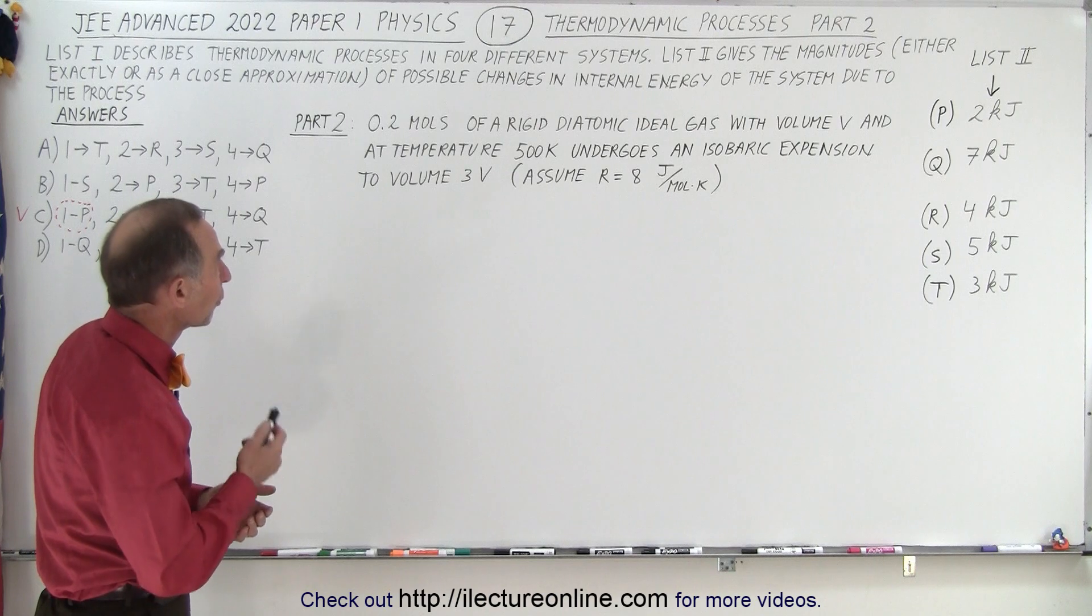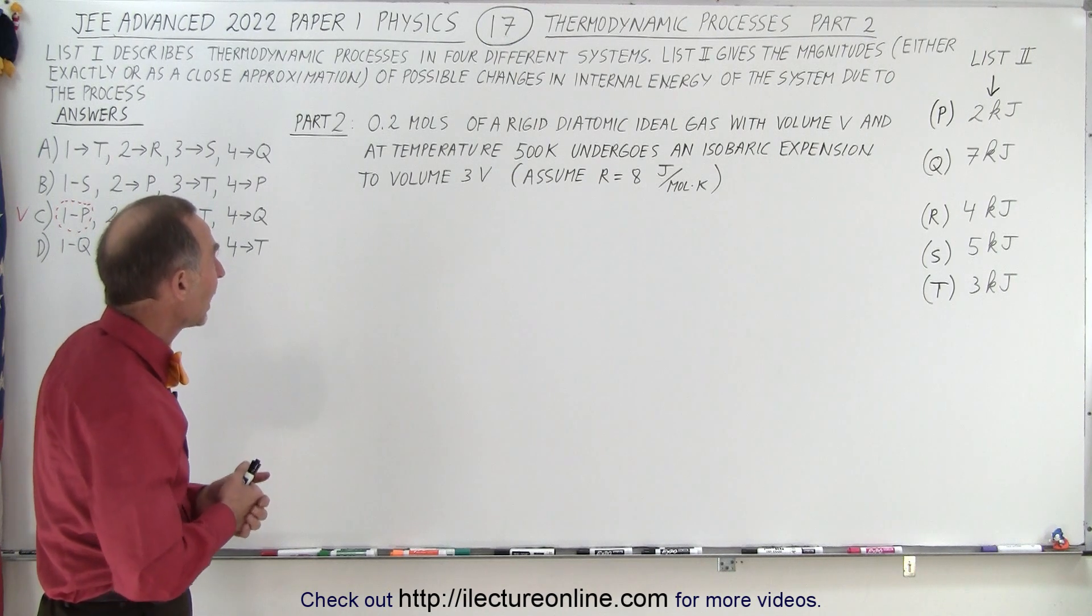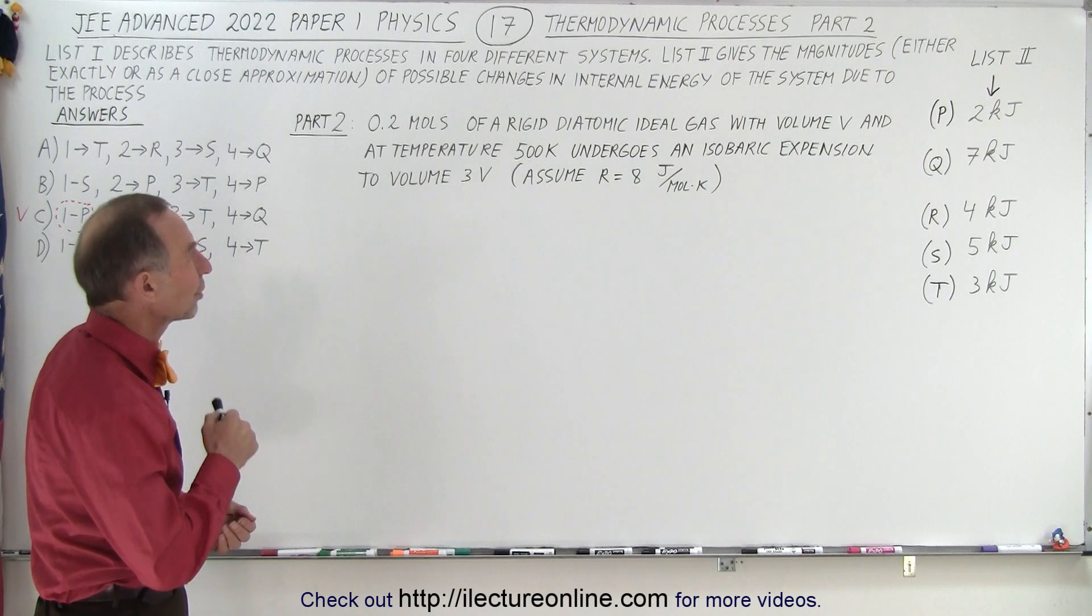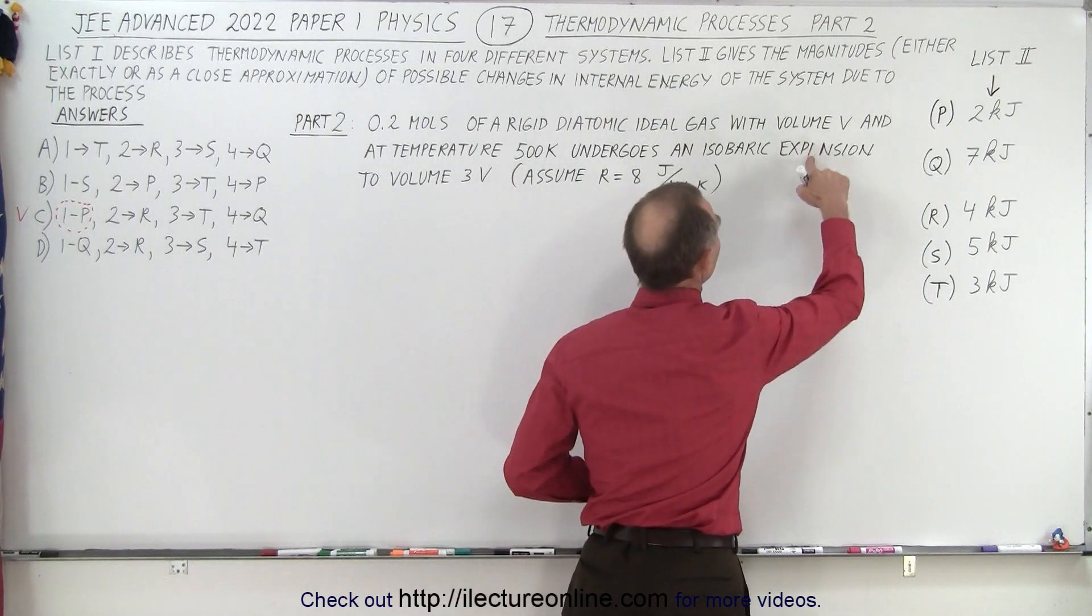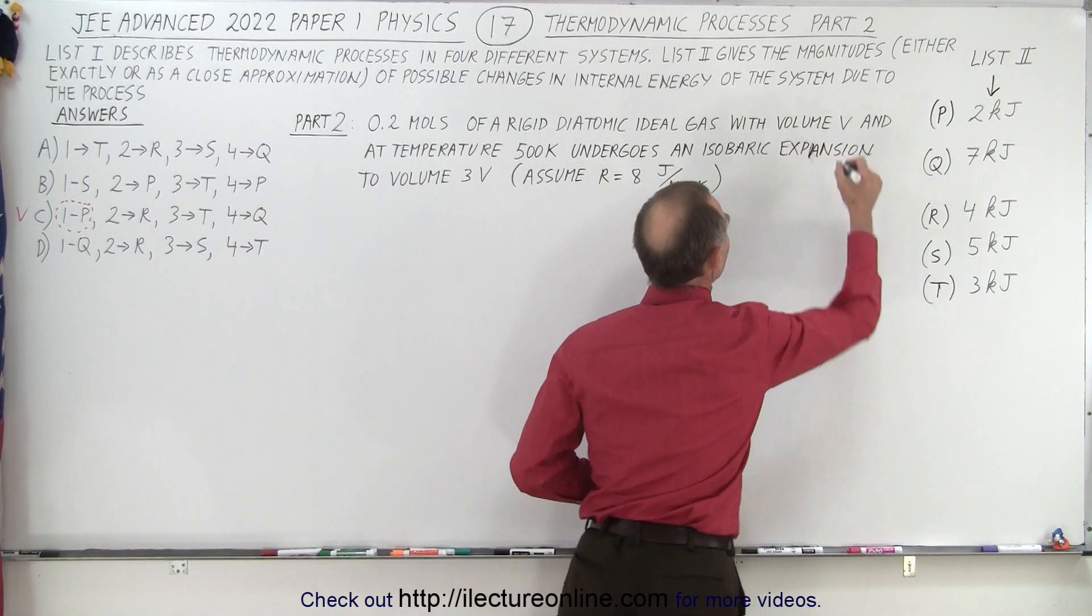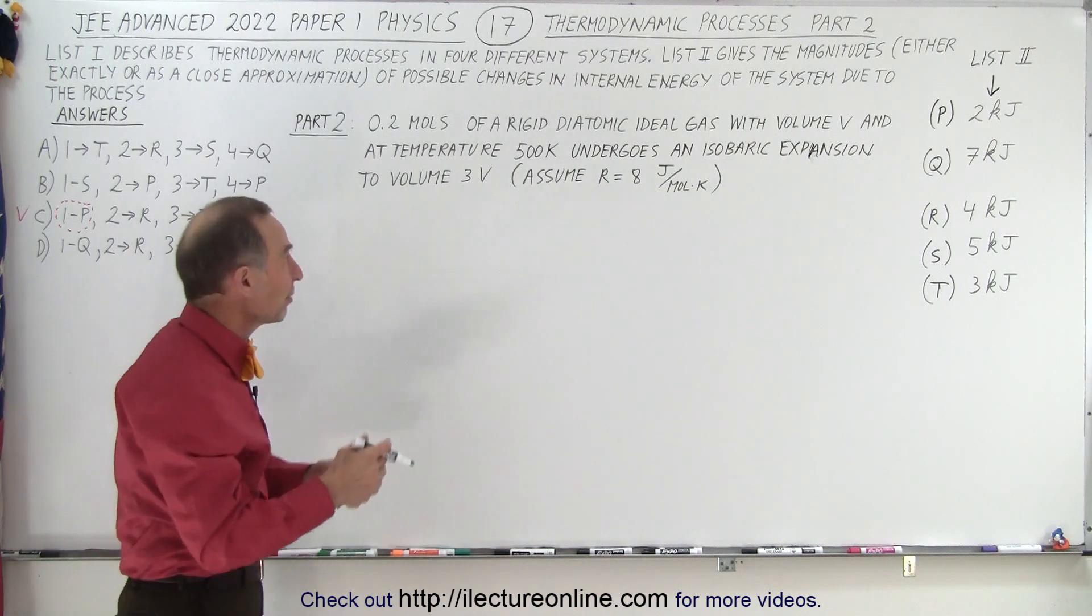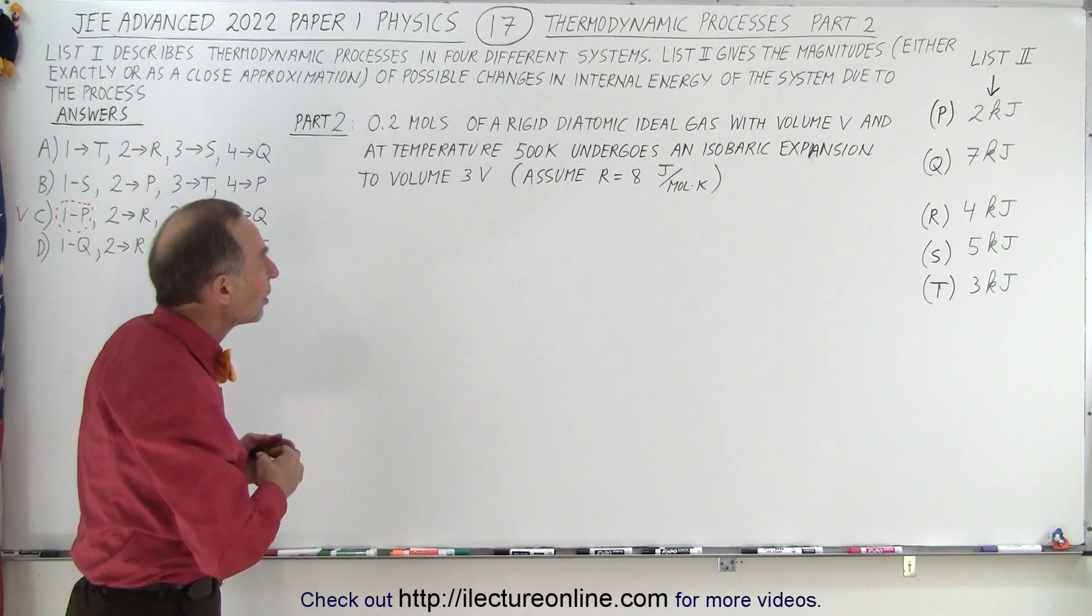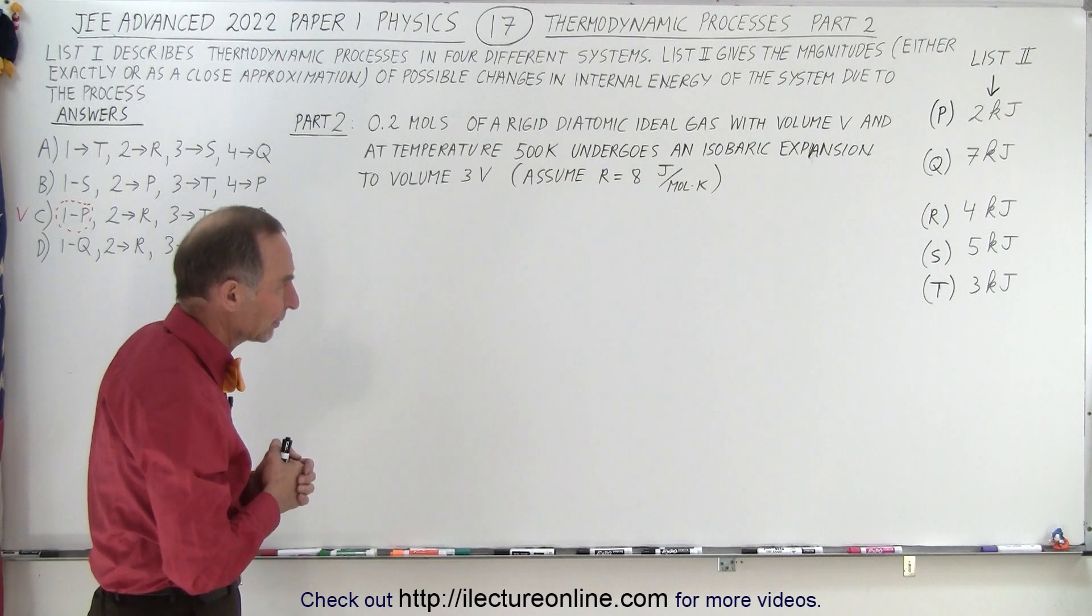0.2 moles of a rigid diatomic ideal gas with volume V and a temperature 500 Kelvin undergoes an isobaric expansion to volume 3V, so it triples in volume and to make things easy they let us assume that R is 8 joules per mole per Kelvin.